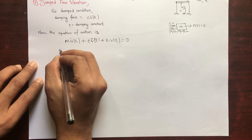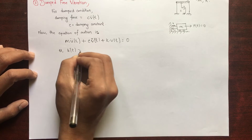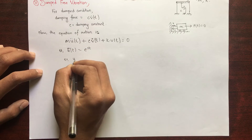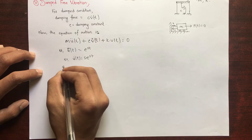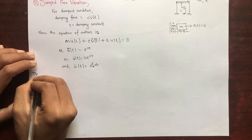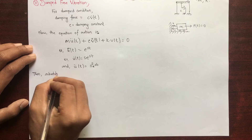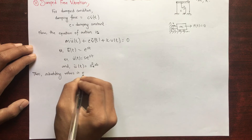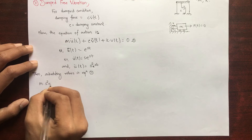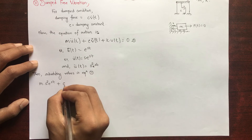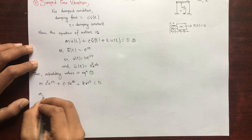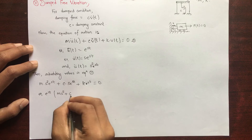The solution is achieved by substituting displacement as e^(st). So displacement u = e^(st), velocity = s·e^(st), and acceleration = s²·e^(st), as also done in the undamped free vibration case. Substituting into the equation of motion gives: m·s²·e^(st) + c·s·e^(st) + k·e^(st) = 0. Taking e^(st) as common: ms² + cs + k = 0.